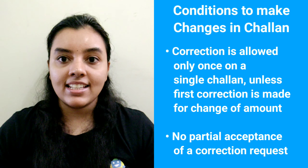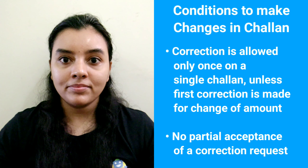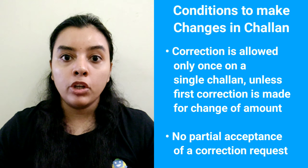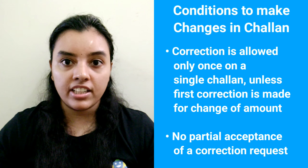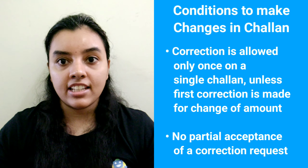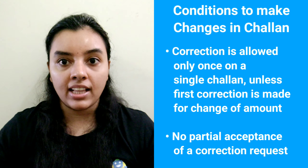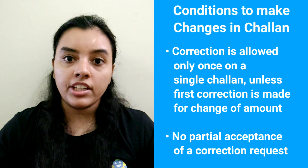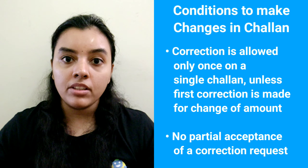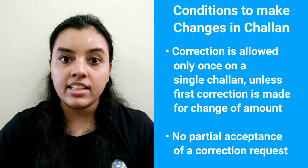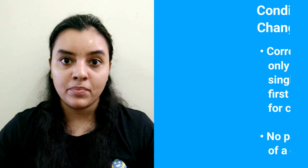Only in such cases will a second correction be allowed. There will be no partial acceptance of a correction request — either all the changes requested will be allowed if they pass the validation test, or no change will be allowed even if one change requested fails the validation test.